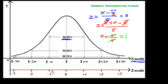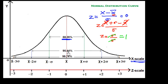Between Z = −1 and Z = +1, the area is 68.26%. Between Z = −2 and Z = +2, the area is 95.44%. Between Z = −3 and Z = +3, the area is 99.74%. This is the basic concept of the normal distribution curve, which we will study in more detail in our next session.